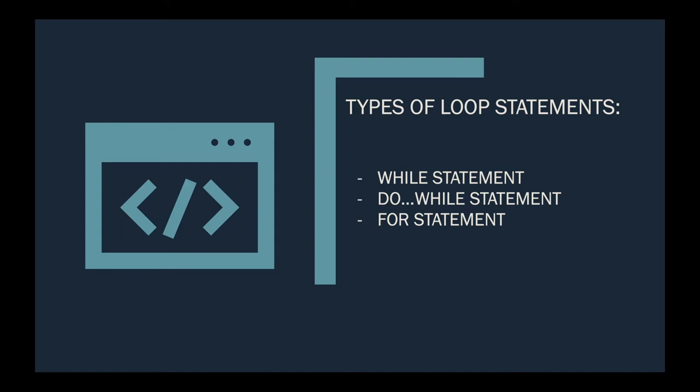There are three types of looping statements I will discuss for this topic: first, the while statement; next, the do-while statement; and lastly, the for statement, or the for loop.